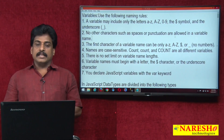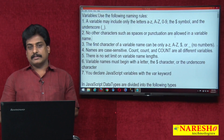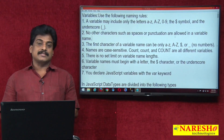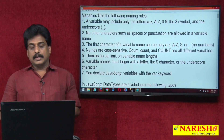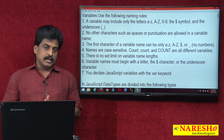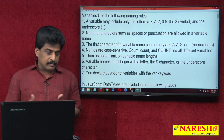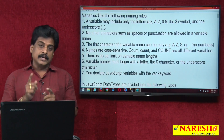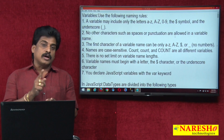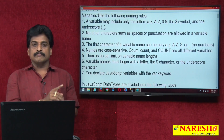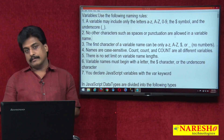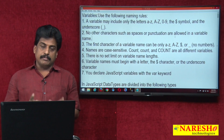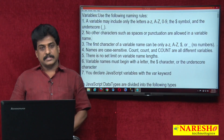In scripting, variable declaration is implicit. In programming languages, variable declaration is explicit. Implicit meaning is dynamic — at runtime, an interpreter tries to understand what data you declared, based on that, what data type or what variable you declared. But in programming languages, variable declaration is completely explicit.